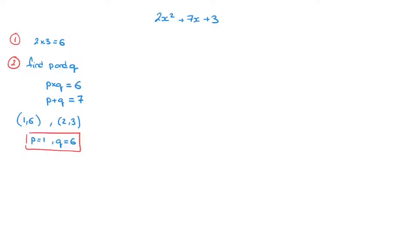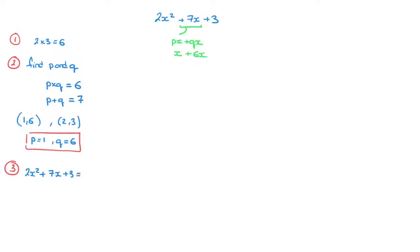We could have called p 6 and q 1 — it would make absolutely no difference. We now move on to step 3, where we split the middle term. The middle term was 7x, and we write it as px plus qx. Because p was 1 and q was 6, that's x plus 6x. So 2x squared plus 7x plus 3 equals 2x squared plus x plus 6x plus 3.